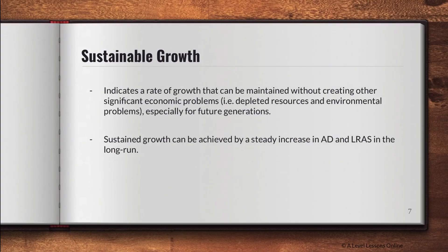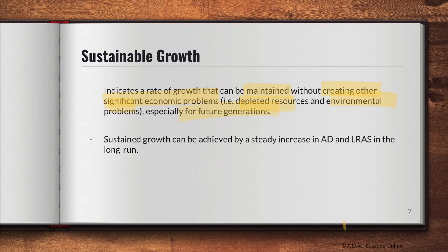Sustainable growth doesn't have any diagrams — it's explanation-based. Sustainable growth indicates a rate of growth that can be maintained without creating other significant economic problems, environmental issues, or social issues — for example, depleted resources or environmental problems for future generations. It has to be self-sustainable and self-reliant, able to regenerate its own resources. Sustained growth simply means lasting or elongating economic growth, whereas sustainable growth is the beneficial one.